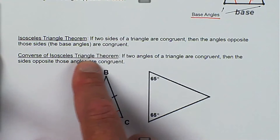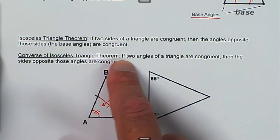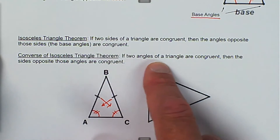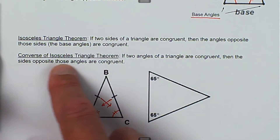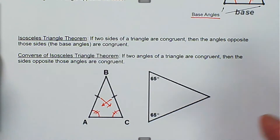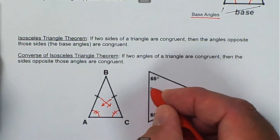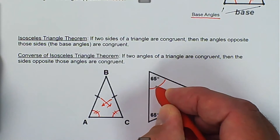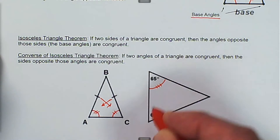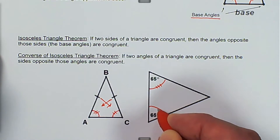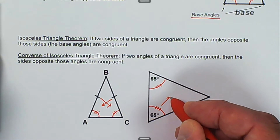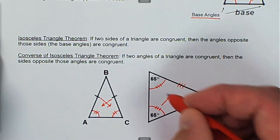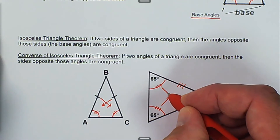Then we have the Converse Isosceles Triangle Theorem: if two angles of a triangle are congruent, then the sides opposite those angles are congruent. So if we know that these angles are congruent — we'll mark them both with three marks because they're all 65 degrees — then the sides opposite those angles are also congruent.